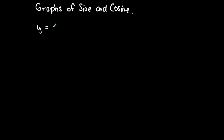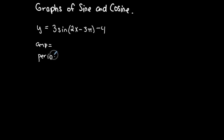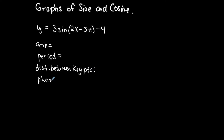Let's start with 3 sine of (2x - 3π) - 4. There's a lot going on with this. You're most likely going to be asked for the amplitude, the period, the distance between key points to make it easier to find those x-coordinates, the phase shift if there is one, a vertical shift if there is one, and whether or not there is a reflection over the x-axis.